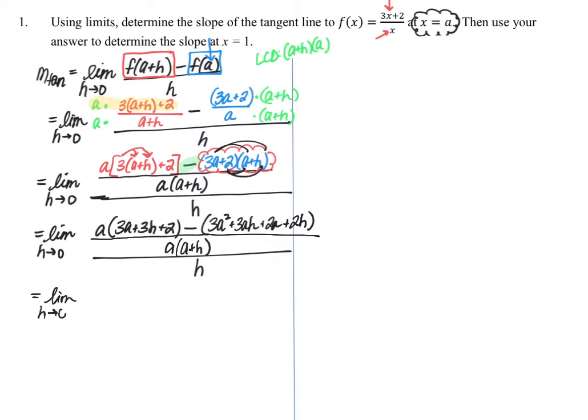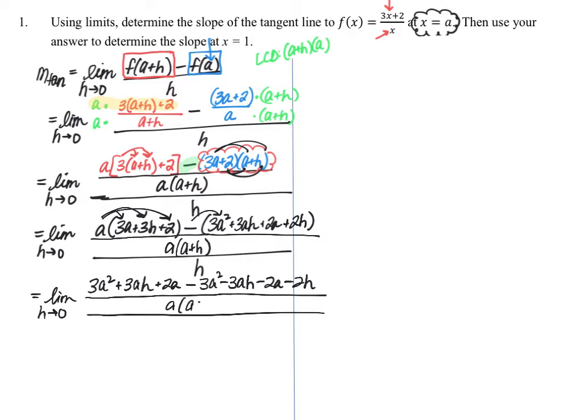All right, more algebra. So distributing again, a times 3a is 3a squared, a times 3h is 3ah. And a times 2 is 2a. Then we've got to distribute this negative as well. So negative 3a squared minus 3ah minus 2a minus 2h. So we just really need to be careful that we're not making any silly computation mistakes here. And then that whole thing is all divided by h. Now, notice I have left this denominator here that I'm highlighting in yellow, a times a plus h. I left it purposely factored because at some point in time, I'm going to do direct substitution. So I really don't need to distribute that, although you could. It's more work and you don't need to.